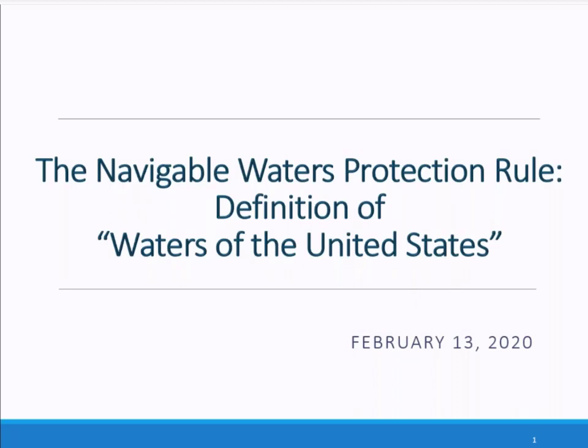This rule recognizes and respects the primary authority of states and tribes over their land and water resources and balances the protection of federal waters with the need to support the nation's economic interests. Having a clear and understandable definition creates a more efficient process for the agencies to make jurisdictional determinations and thereby get predictable decisions on when permits are required to the public quicker, allowing for necessary economic growth to move forward. For Mr. James, his goal is to improve the overall efficiency and consistency within our regulatory program. This final rule certainly takes a large step in moving us towards that objective.